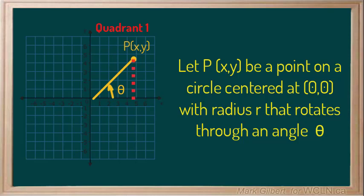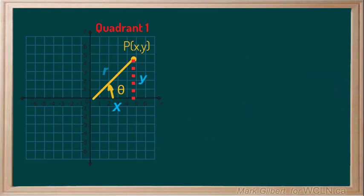We can then make a triangle with the x-axis. The sides of the triangle are made up of the x and y values of our point P. The terminal arm is the radius of the circle R.